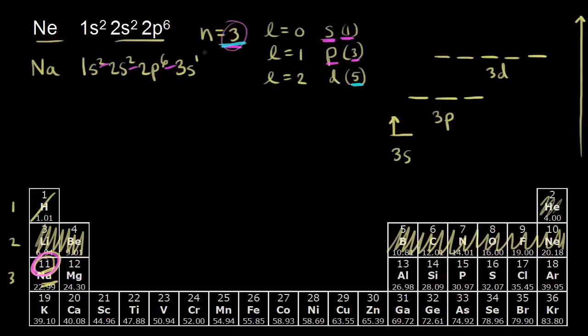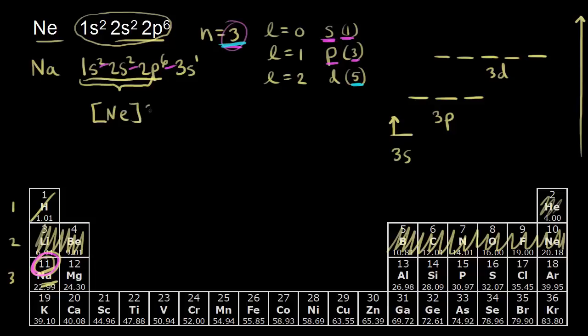We can complete the electron configuration for sodium by adding 3s1, because we have one electron in an s orbital in the third shell. So the complete electron configuration for sodium is 1s2, 2s2, 2p6, 3s1. Notice that 1s2, 2s2, 2p6 is the same electron configuration as neon. We could represent all of that with neon in brackets and then write 3s1. This is called noble gas notation, because we're using the noble gas that precedes sodium — working backwards on the periodic table, the first noble gas you hit is neon.